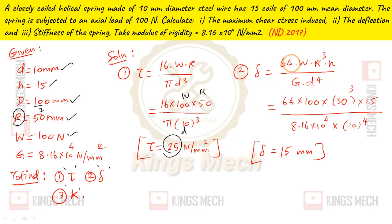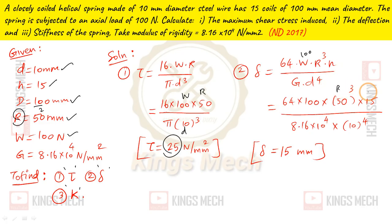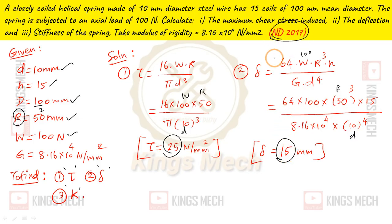Deflection delta equals 64WR³N divided by G·d⁴. Direct substitution: W = 100, R = 50, N = 15, d = 10. This problem was asked in the November-December 2017 exam.